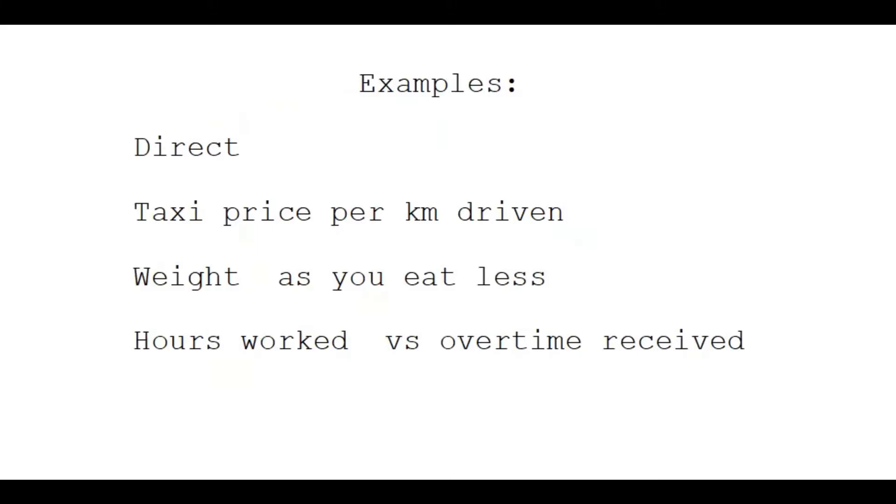Let's look at some examples when we're talking about direct proportion especially. Let's talk about the taxi price per kilometer driven. Now you know, if you drive further in a taxi, you're going to have to pay more. So if the kilometers increase, or the distance, the price will also increase. And with weight, let's say as you eat less, you're going to lose some weight. So that's also going down. So both arrows are pointing in the same direction.